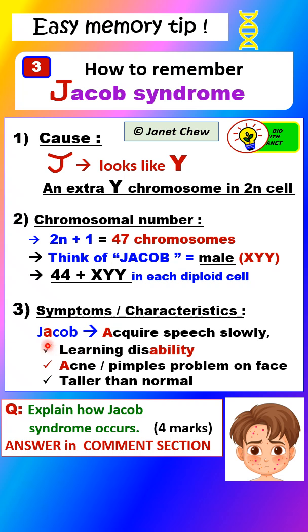Now for the symptoms or characteristics: the second letter A stands for 'acquire speech slowly,' meaning he learns to speak very slowly in childhood and has a learning disability — so A for ability becomes disability. The A also stands for acne, meaning pimples on the face. Another characteristic is that he is taller than normal.